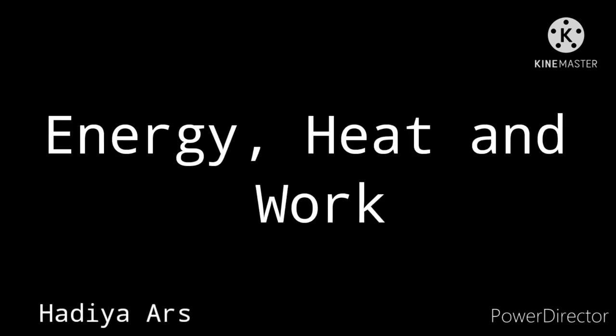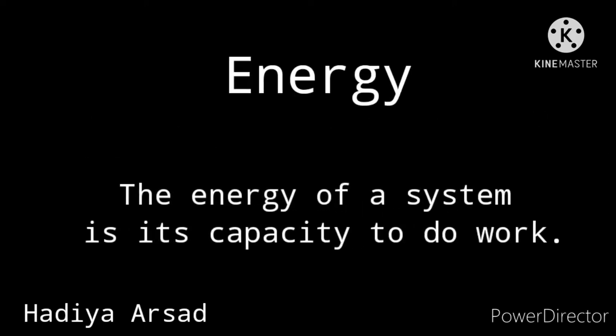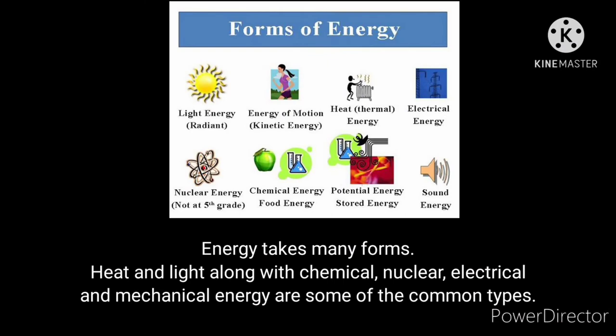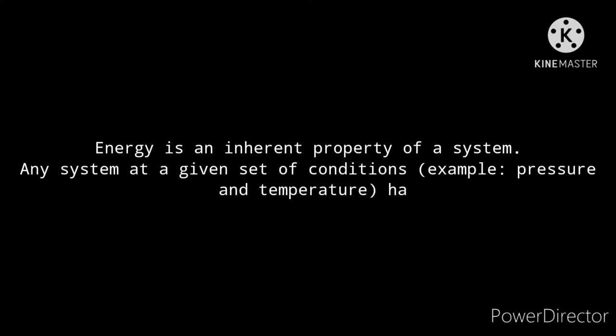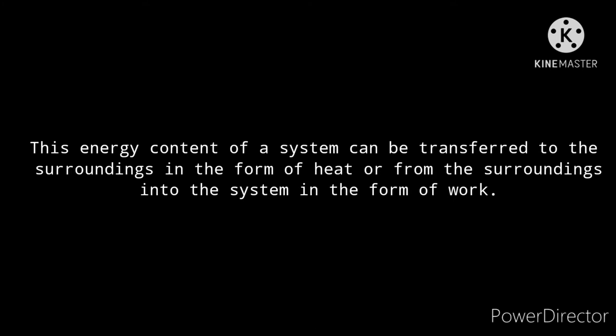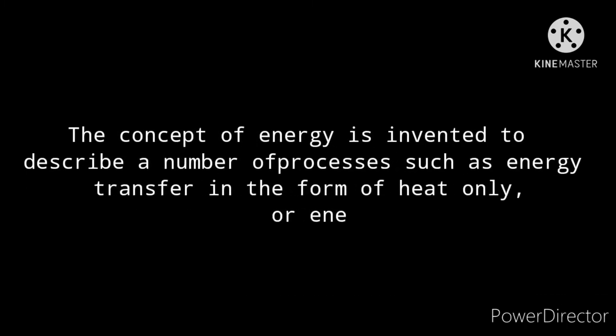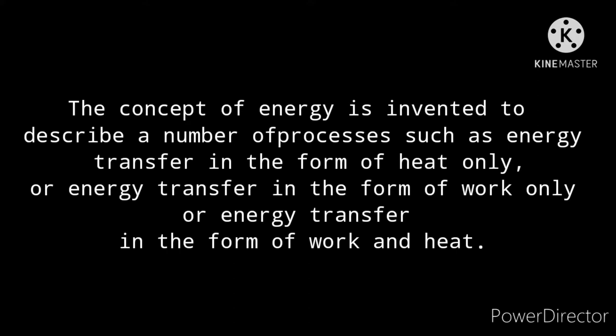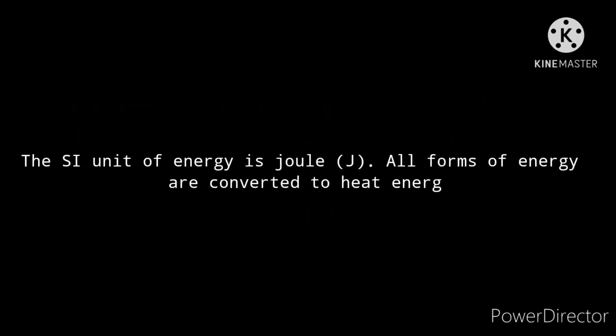Energy, heat, and work. The energy of a system is its capacity to do work. Energy takes many forms — heat and light, along with chemical, nuclear, electrical, and mechanical energy are some common types. Any of these forms can be converted to any other. Energy is an inherent property of a system at a given set of conditions, e.g. pressure and temperature. This energy content can be transferred to the surroundings as heat or from the surroundings into the system as work. Energy transfer can occur as heat only, as work only, or as both work and heat. The SI unit of energy is the joule.